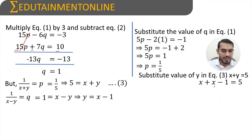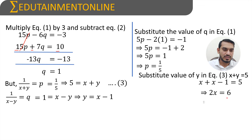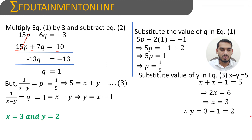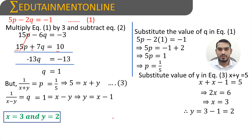So x plus (x minus 1) equals 5, which gives 2x minus 1 equals 5. Transposing minus 1, we get 2x equals 6, so x equals 3. Substituting x equals 3 into y equals x minus 1 gives y equals 3 minus 1 equals 2. Therefore x equals 3 and y equals 2 is the solution of the equations.